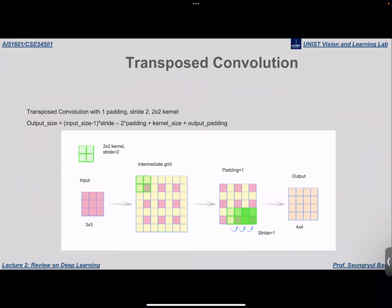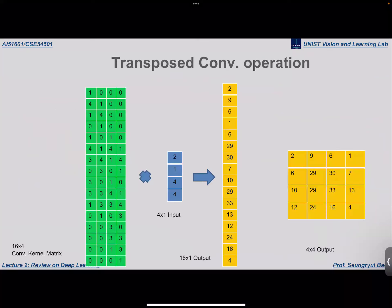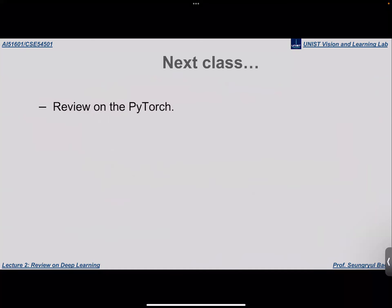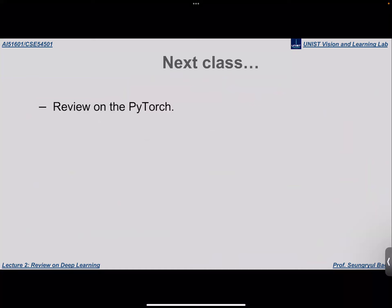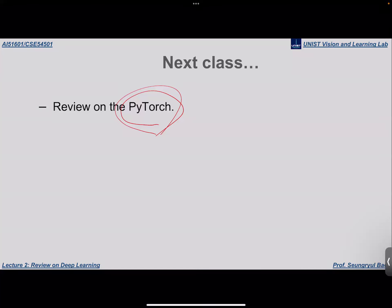The later parts covering semantic segmentation and other types of convolution will be tackled in a later class. We will finish today's lecture here. Next Monday we will learn about PyTorch, and using the concepts covered today you will implement Python code. PyTorch is a library that helps you implement deep architectures easily, so it is not that difficult.